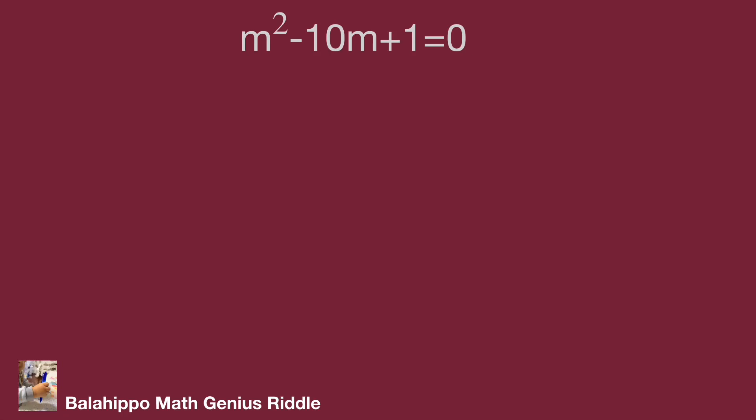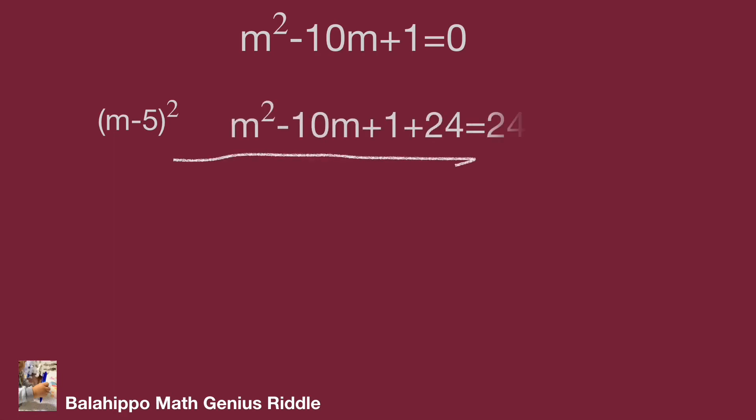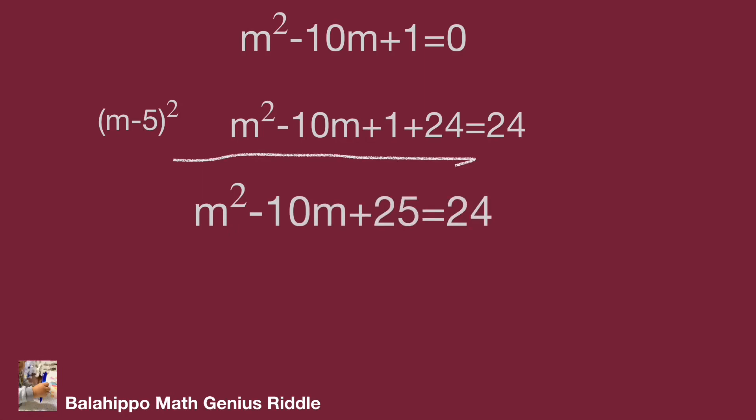Next, I'm going to generate the quantity (m − 5)². Adding 24 to both sides of the equation, the left side becomes m² − 10m + 25, which changes to (m − 5)² = 24.